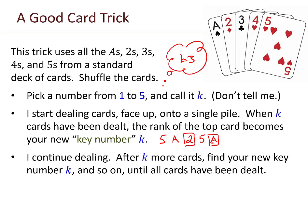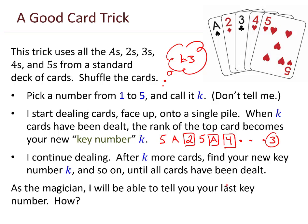I continue dealing. After K more cards, find your new key number K, and so on, until all the cards have been dealt. So continuing this example, maybe after that there comes another 5, and then maybe an ace. But remember, when I hit the 2, that changed your key to become 2. And so you count 2 more, and now your ace is the next key. This pattern will continue where I'm dealing out cards, and throughout the process, you are always updating what your number K is.